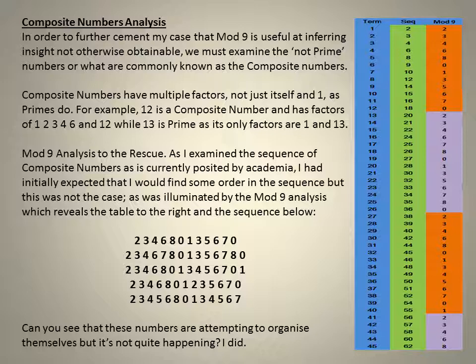12 is a composite number and has factors of 1, 2, 3, 4, 6, and 12, while 13 is prime. Mod nine analysis to the rescue.